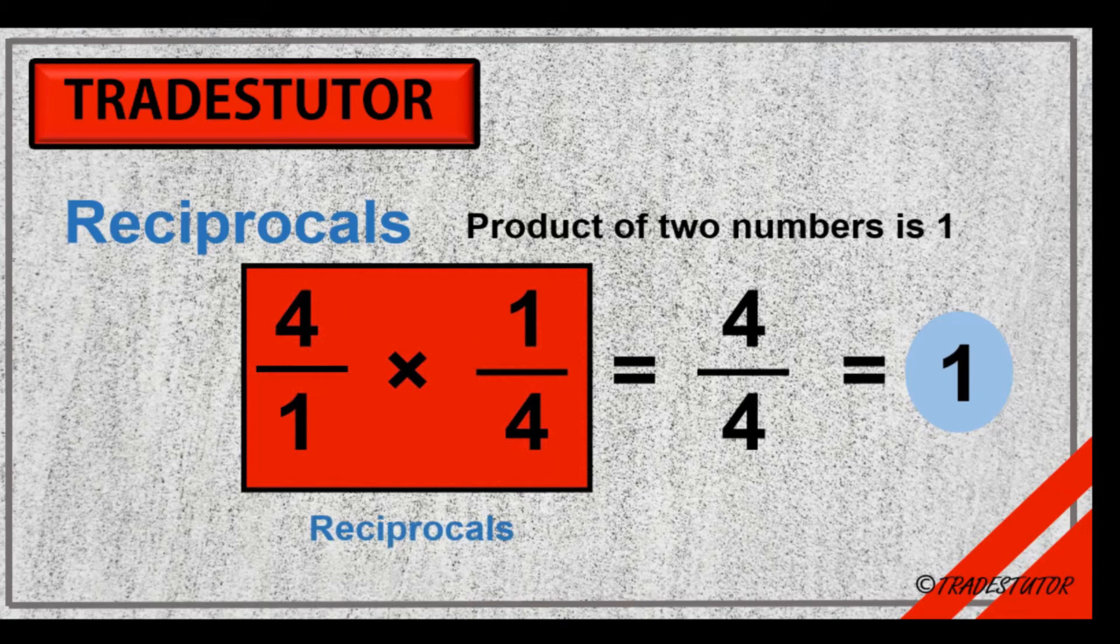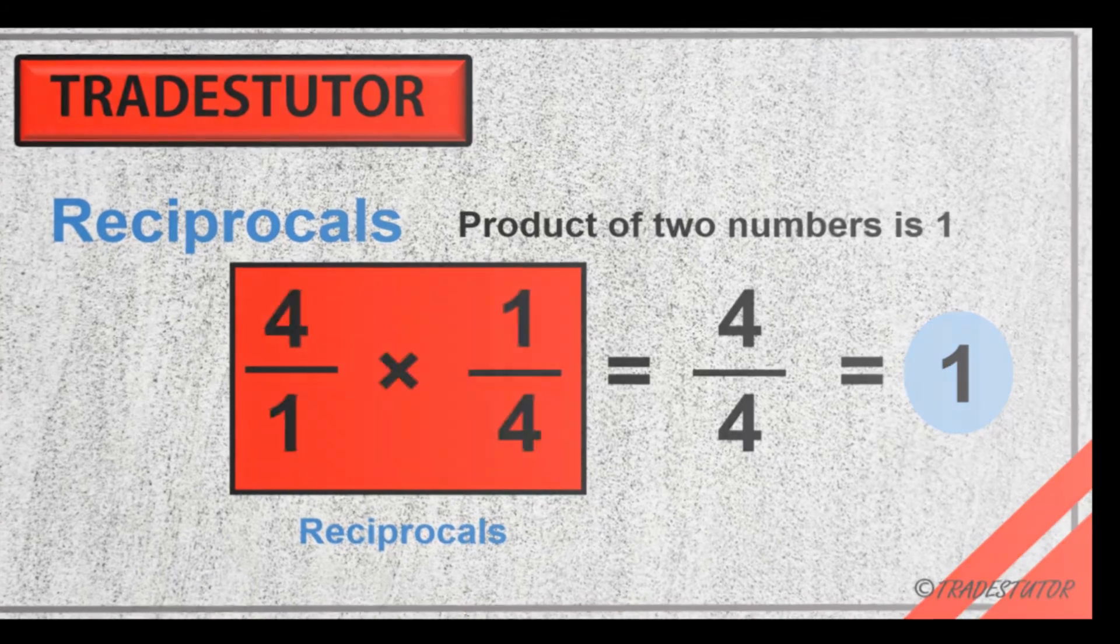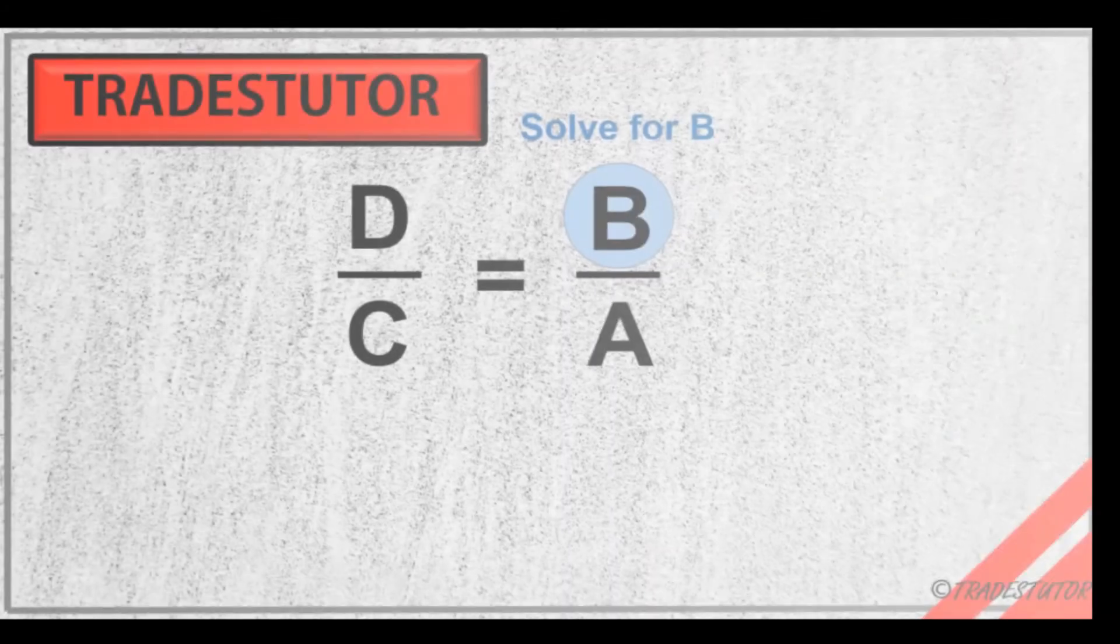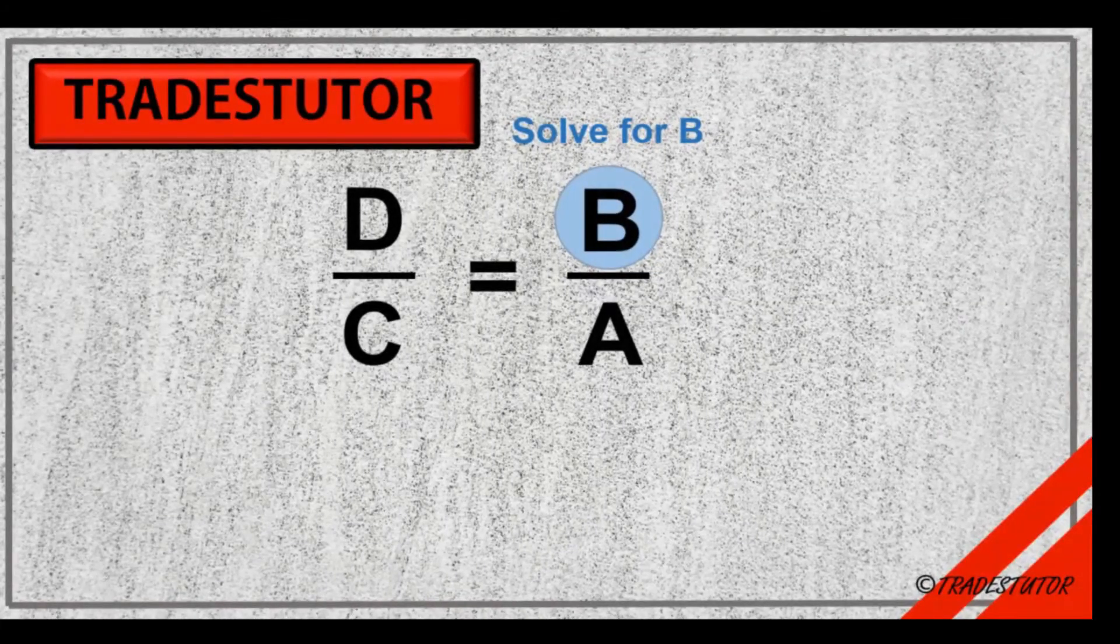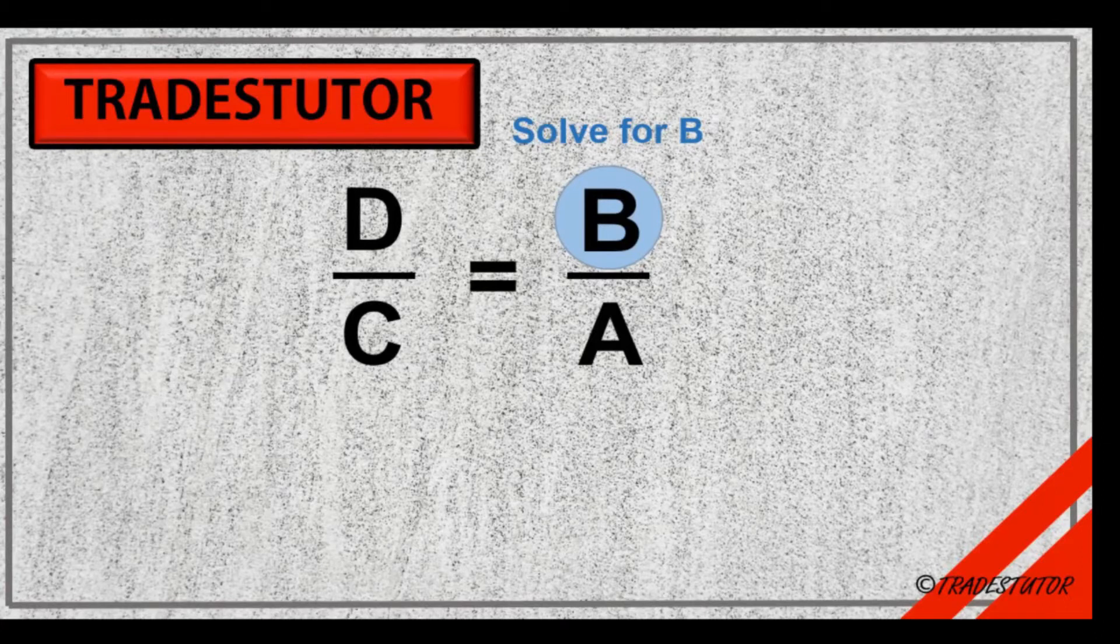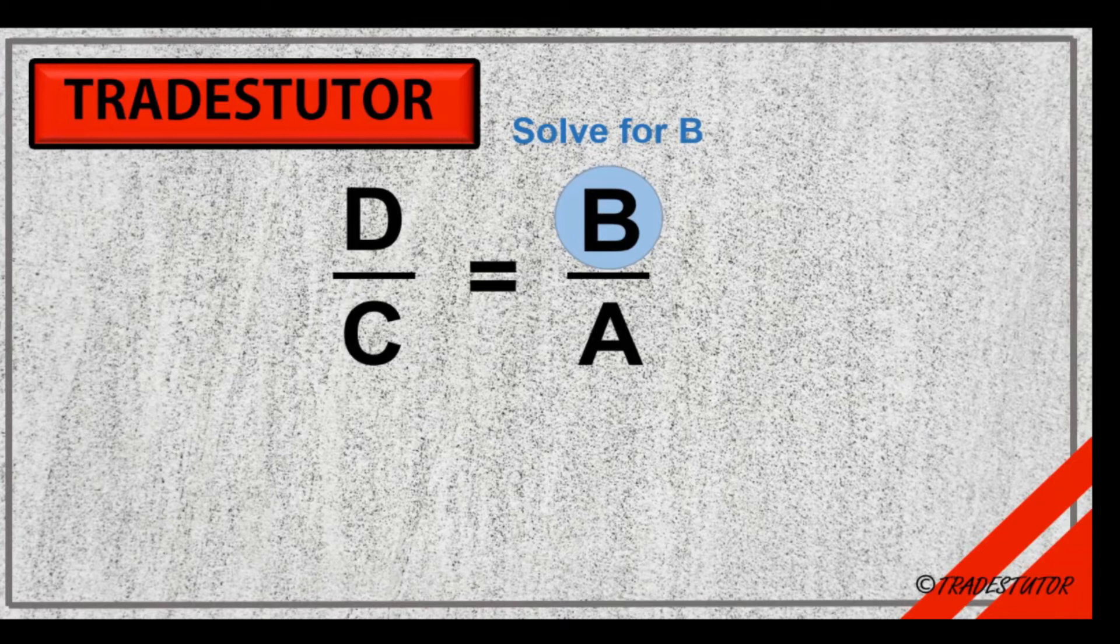Now, let's go back to our equation and solve for B. So what do we do? We need to get A out of there. Well, if we multiplied by its reciprocal, or in this case A over one, because really we can say it's one over A times A over one, well, those will cancel out.